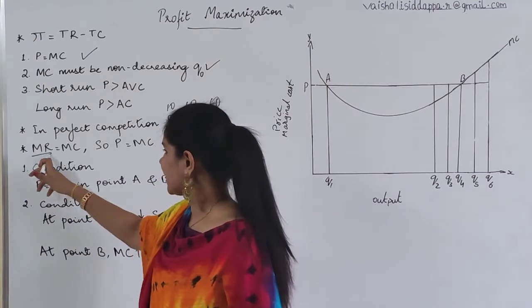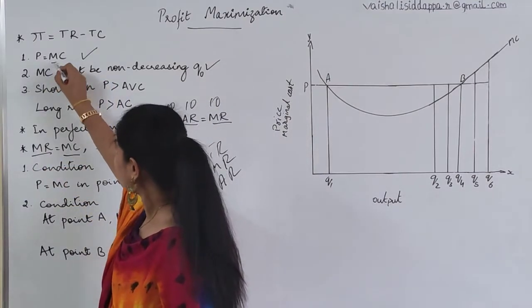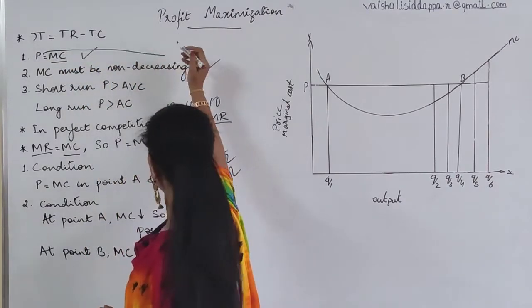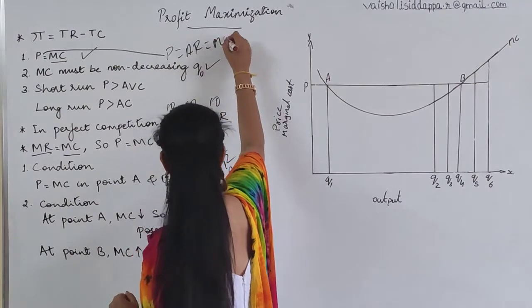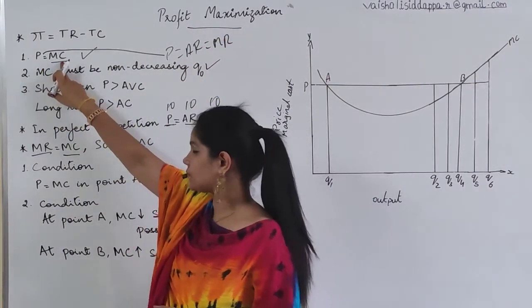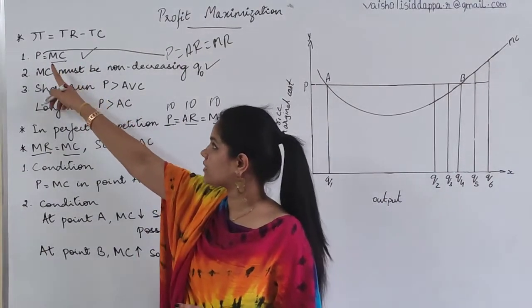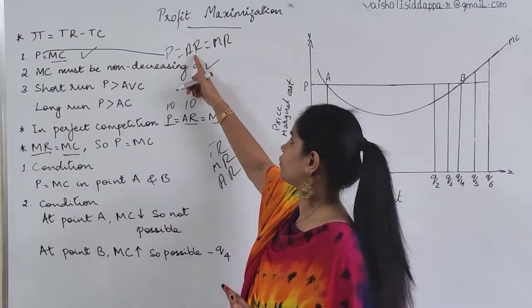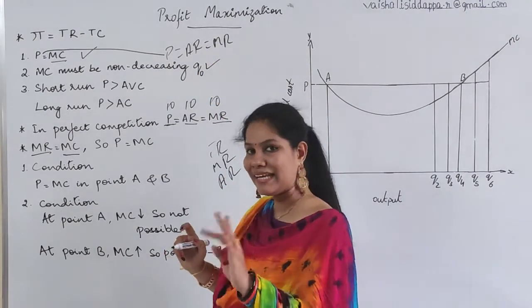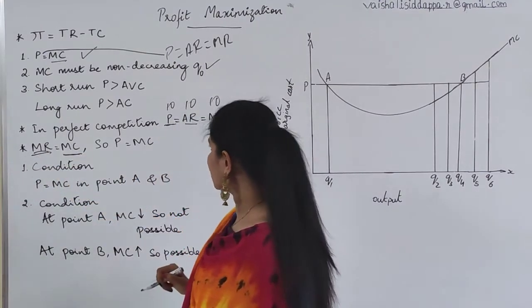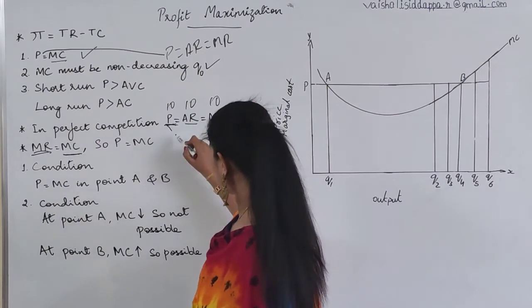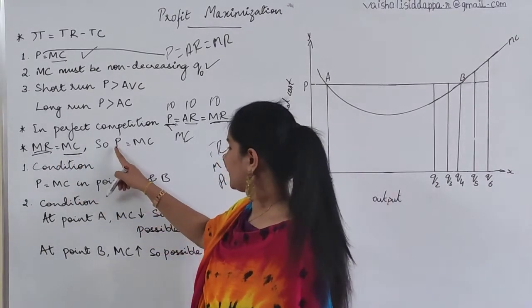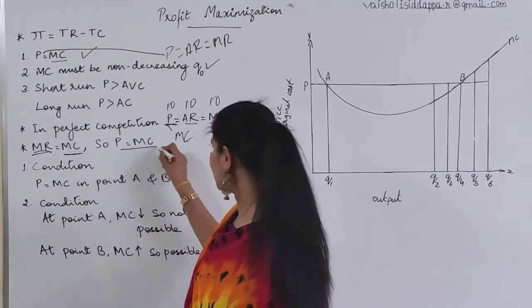After this, what the condition says is MR should equal MC. Since P equals MR in perfect competition, and the condition also says P should equal MC, it follows logically that MR equals MC. So P equals MC in two points, and that is the logical conclusion.